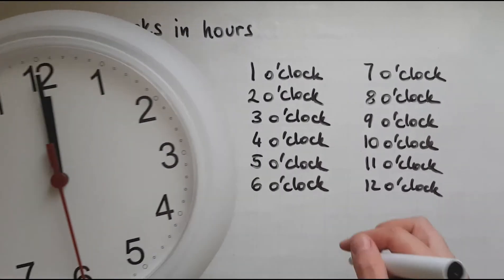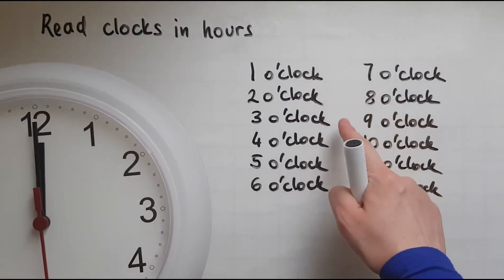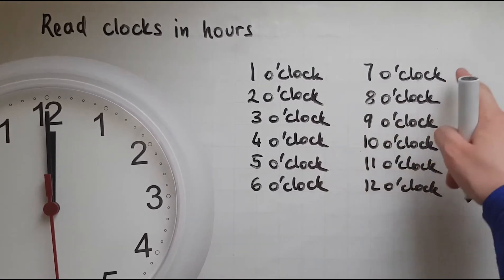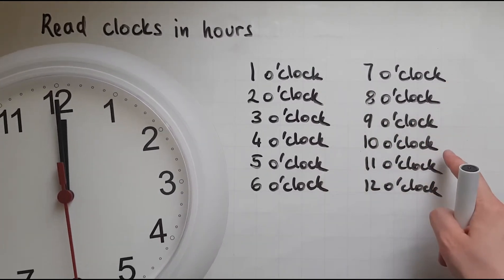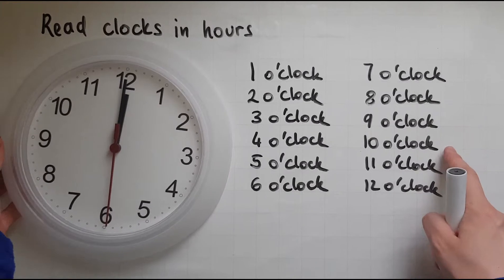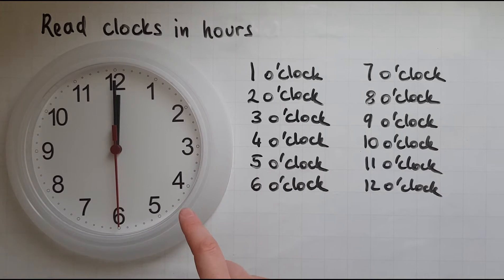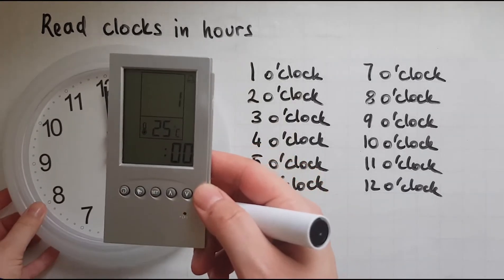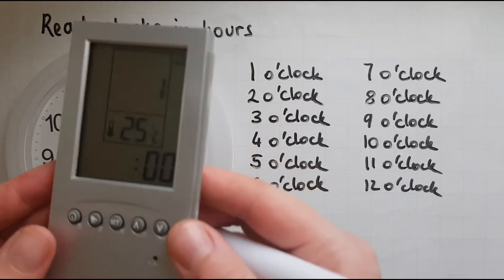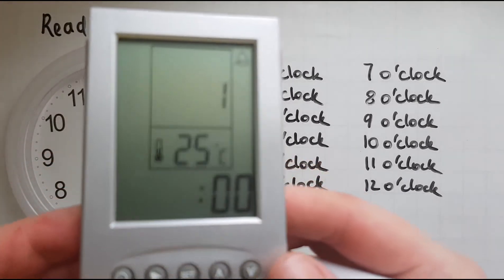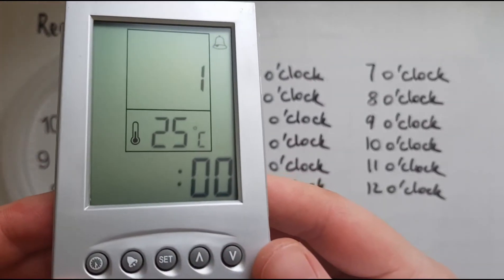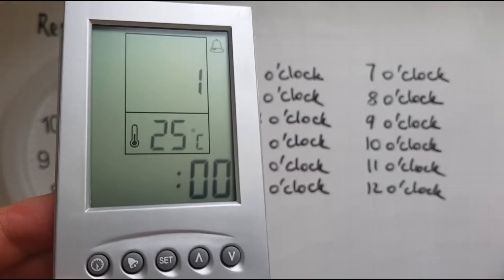I've shown one o'clock, two o'clock, three, four, five, six, seven, eight, nine, ten, eleven, and twelve o'clock using this analog clock. Now what I will be showing is another type of clock that you use maybe to set alarms or you've got on your phones.